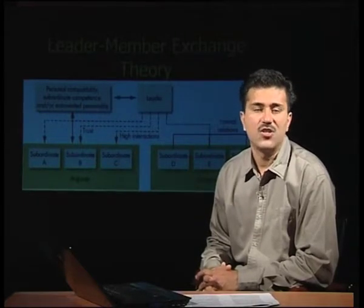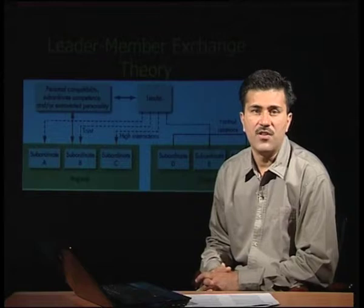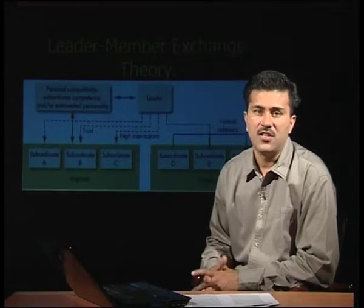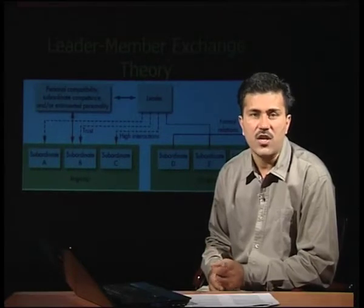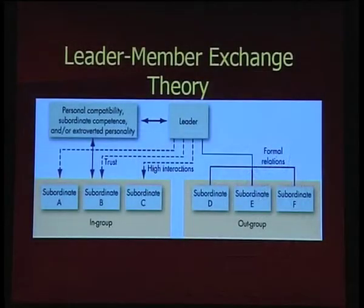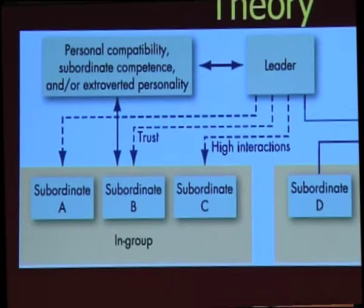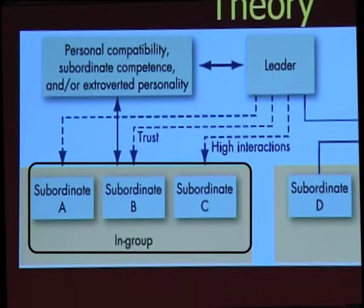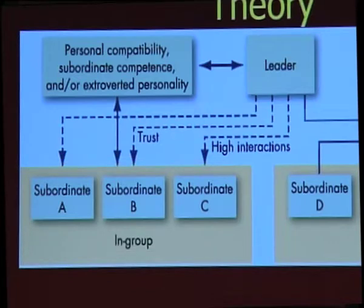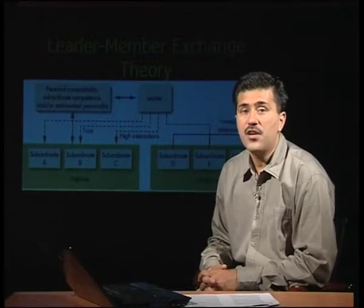The leader does not require people who come with a list of problems — if you are not part of the solution, you yourself are a problem. Personal capability, competence, and extrovert personality appeal to the leader. In the diagram, subordinates A, B, and C are in the in-group, with high degree of interaction, high trust, and high personal commitment.